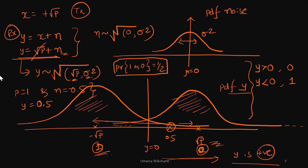So the decoding strategy is: if y is greater than 0, decode as 0; if y is less than 0, decode as 1. The decision boundary is y equals 0. There is a question for you: what is your decoding strategy when y exactly equals 0? For example, if P equals 1 and noise equals minus 1, then y becomes 0. Please put your answer in the comment box.